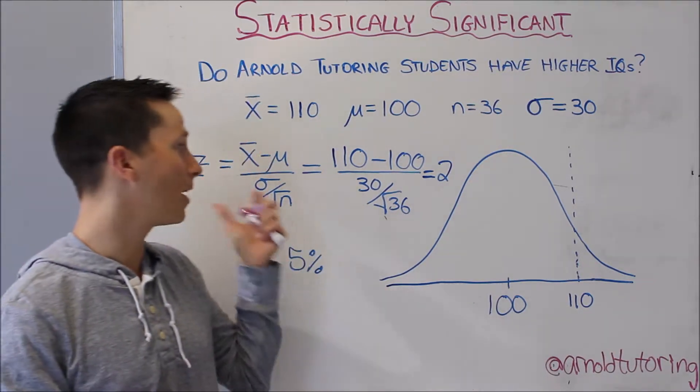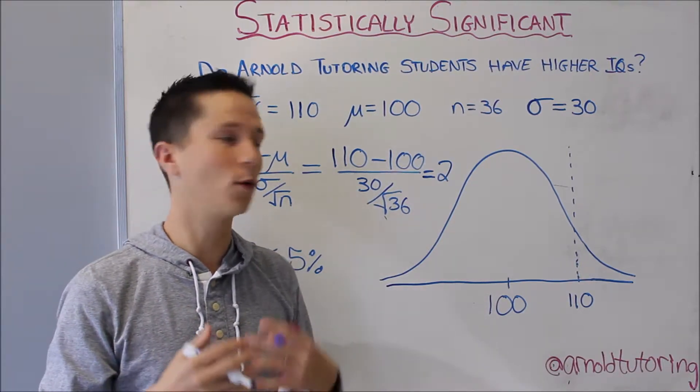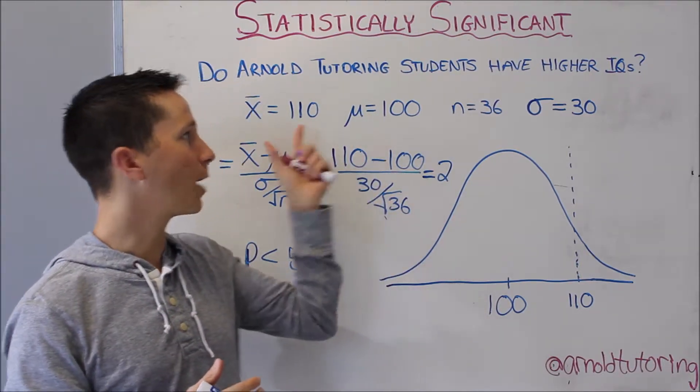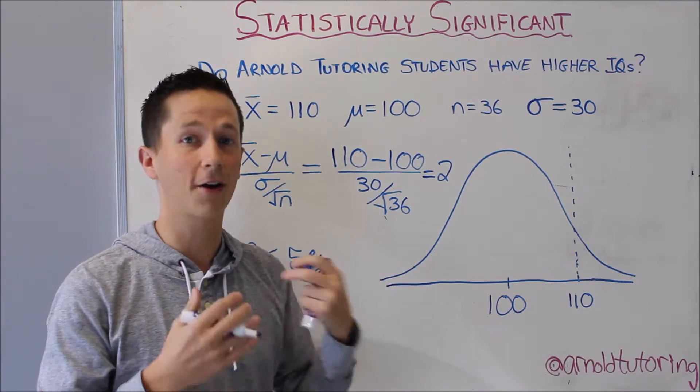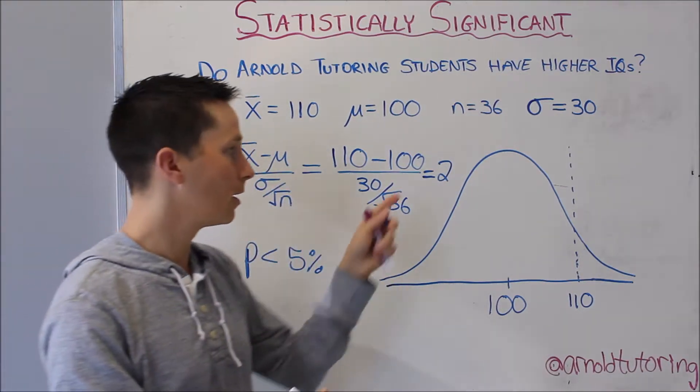You would look that up in the standard normal distribution table as your z value. Can you try and figure out what's the probability that we actually get this result of 110 on average for our students? In this scenario, a z value of 2...